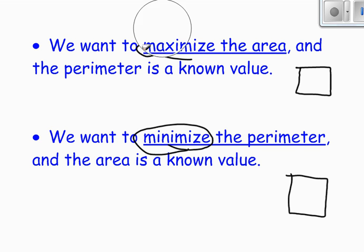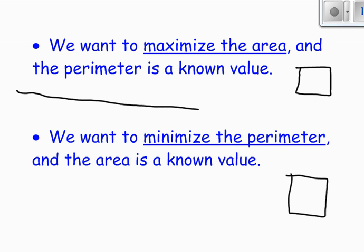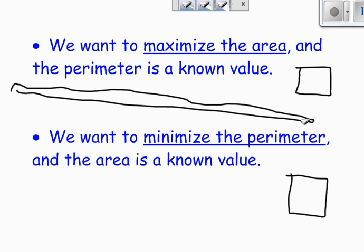If we want to minimize the perimeter and the area is a known value, we make a square. In general, whenever you see a word like maximize or minimize, you know that you are optimizing and you want a square. Now one thing we haven't talked about is we're always talking about maximizing the area. So what about maximizing the perimeter?